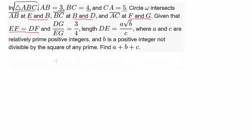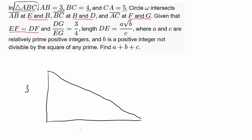We have triangle ABC and we know it's a right triangle, so let's draw it. We have sides 3, 4, and 5 and label it ABC. Circle Omega intersects AB at B and some point E along the way, BC at B and some point D, and AC at F and G. We know EF is equal to DF.